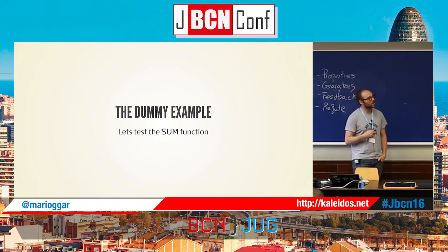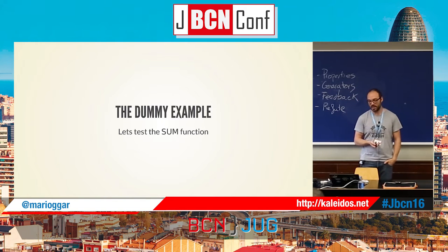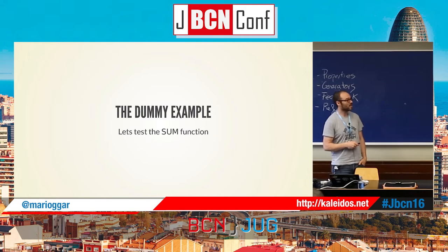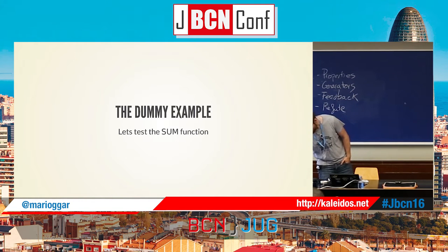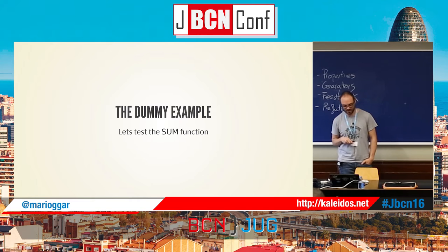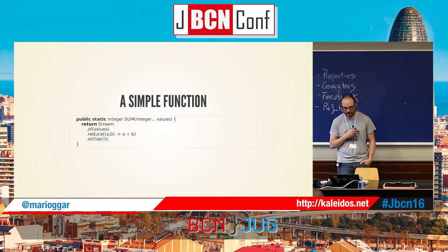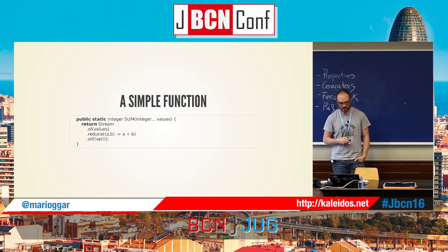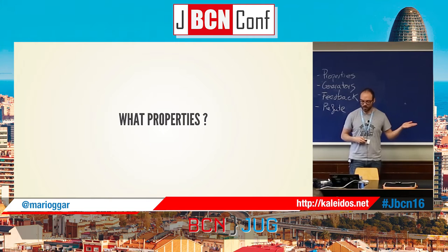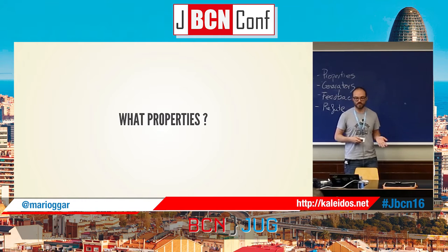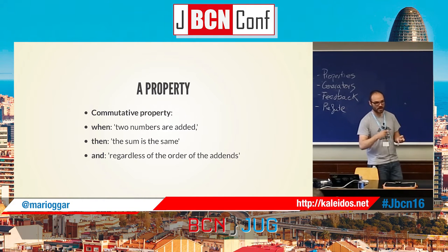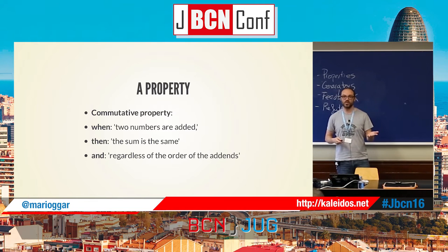I'll be using a dummy example — the sum function, which is really simple but helps explain things. Here we have a possible implementation of a sum of integers. It doesn't matter the implementation, but because it's a sum, we know it should have some properties. We may all know it has the commutative, distributive, and so on. Let's pick one of them.